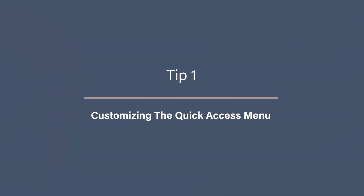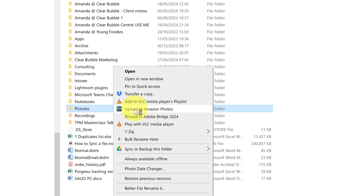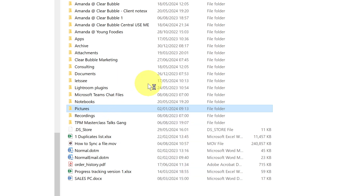Tip 1: Customizing the Quick Access Menu. Let's talk about the Quick Access Menu. This feature allows you to pin frequently used folders for easy access. Simply right-click on the folder and select Pin to Quick Access. You can remove folders by right-clicking again and selecting Unpin from Quick Access. This is a great way to keep your most used folders at your fingertips, so put that folder of photos in Quick Access now so you can always find it.